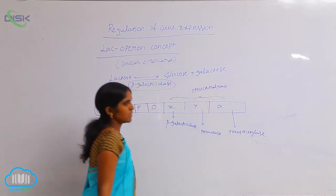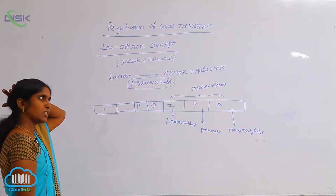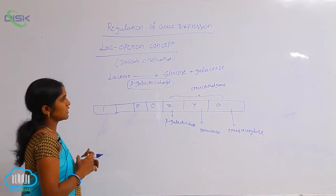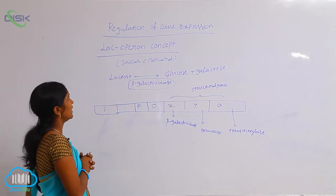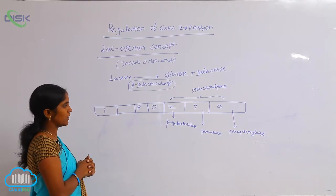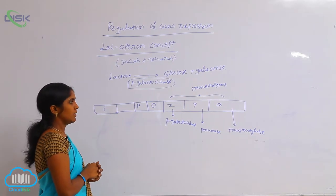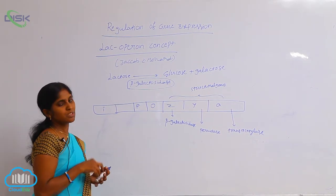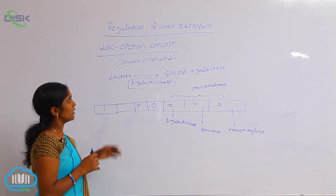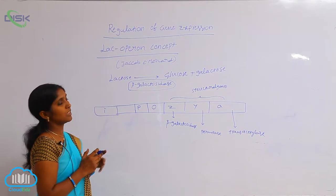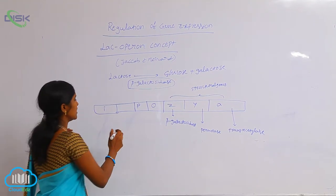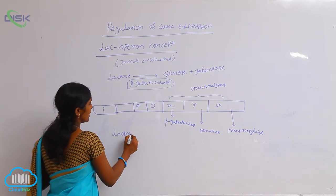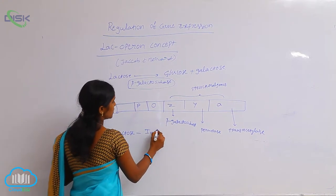Here the system is a repressible system, meaning negative regulation occurs in the lactose operon system. For lactose metabolism, the substrate is most important. The substrate here is lactose, and lactose works as the inducer — lactose plays the role of inducer.